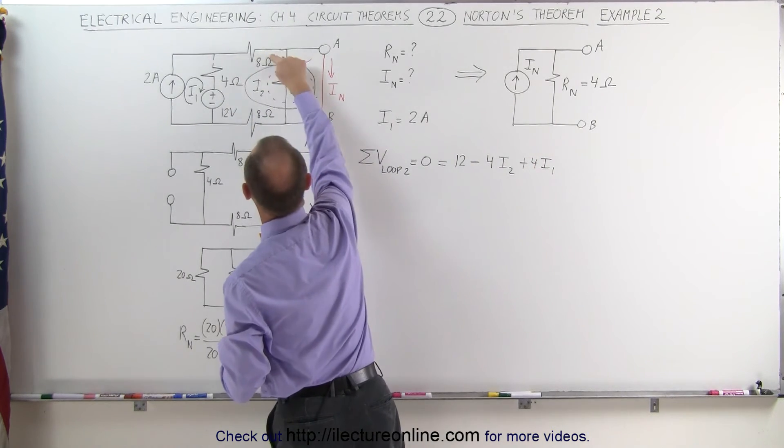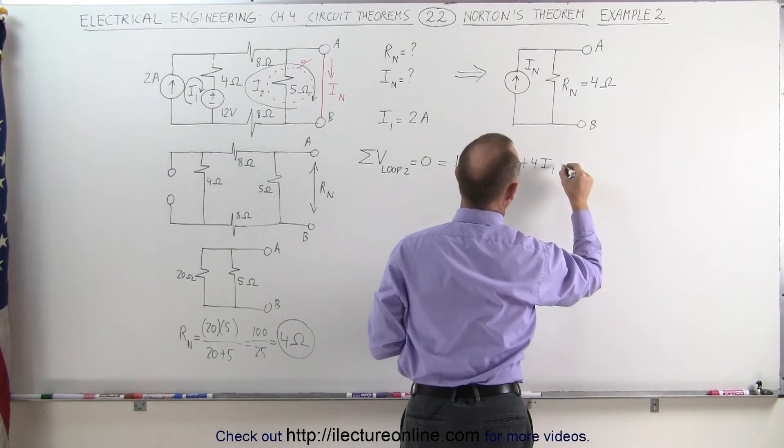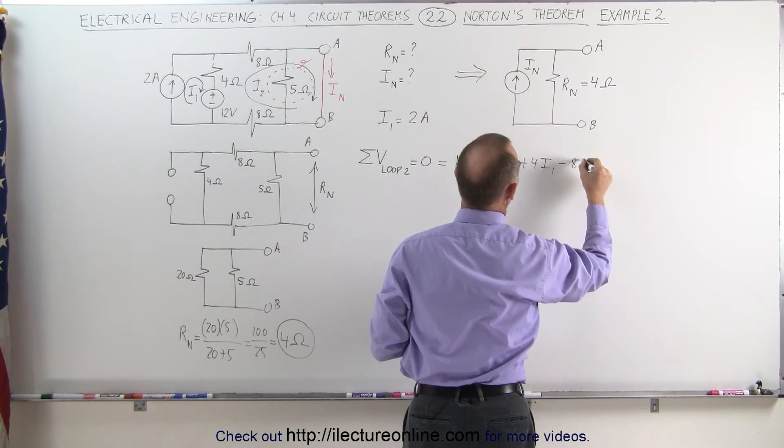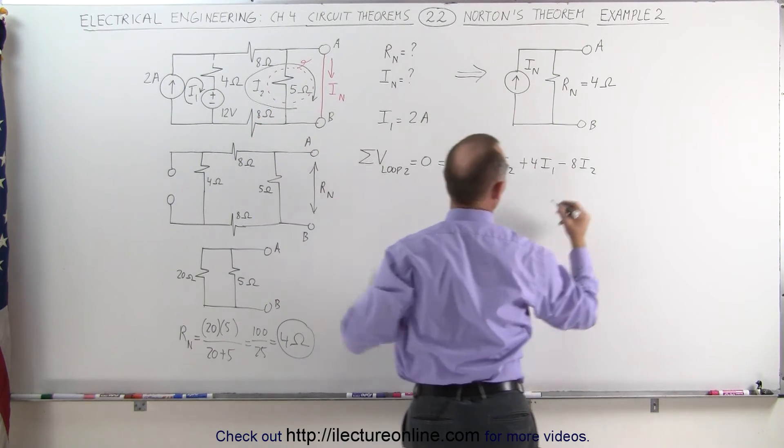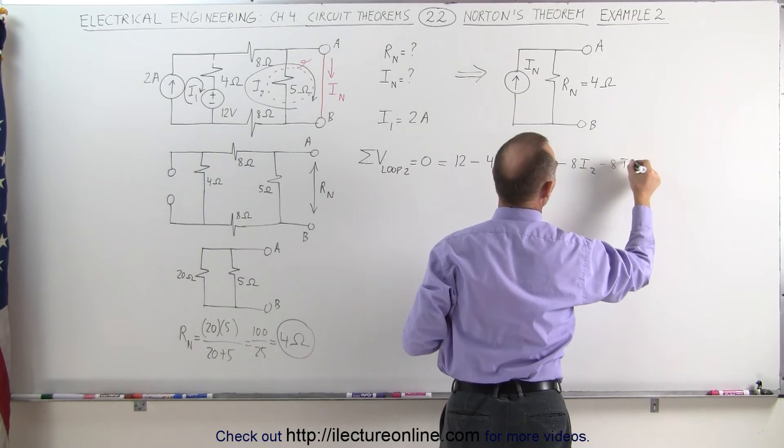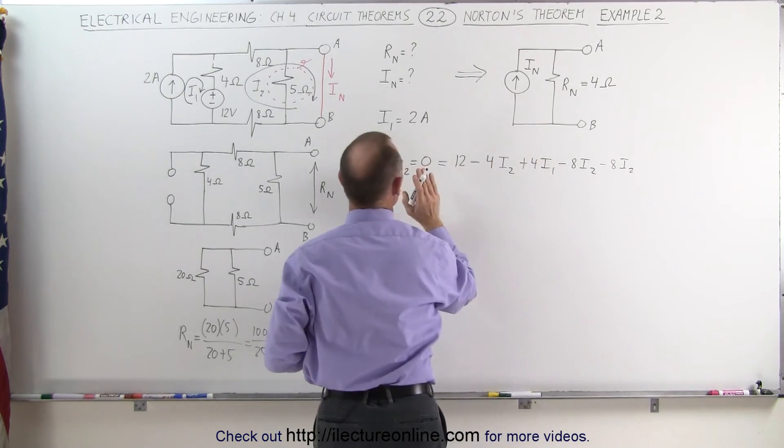Then we come around the corner. We go across this resistor which is 8 ohms. That's minus 8 I2. Come around here. Bypass the 5 ohm resistor. Go through this resistor which is another minus 8 times I2. And all that adds up to 0.